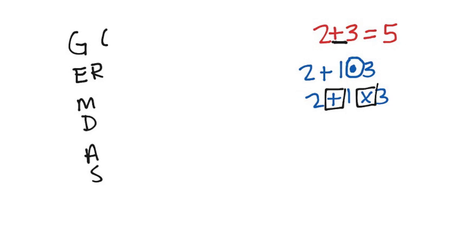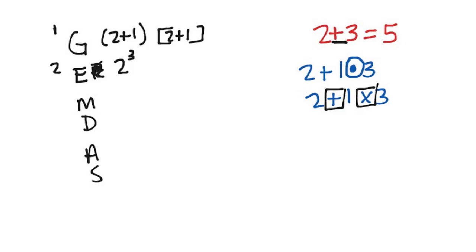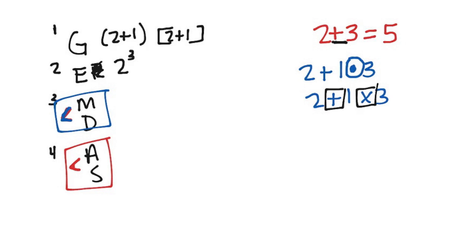G stands for grouping symbols — like parentheses or brackets where numbers are inside a group. E and R is the next step: E represents exponents like 2 to the third power, and R stands for roots and radicals — don't worry about that part, you'll need it more in 7th and 8th grade. The third step is multiplication or division — that's the homies. And the fourth step, the very last step, is addition or subtraction, whichever you see first.